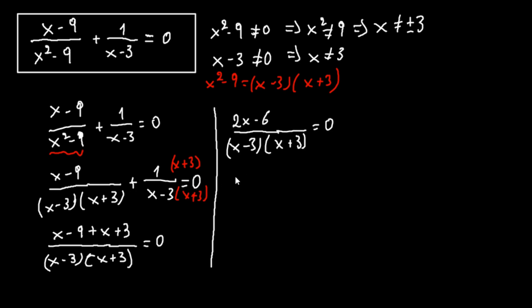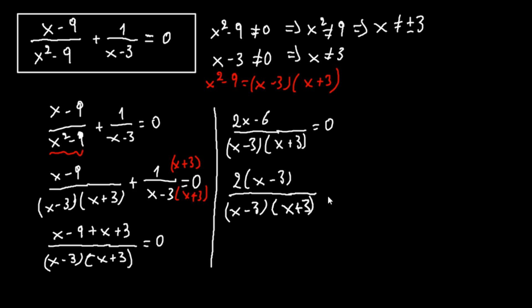Here we take out common factors. We have 2 times x minus 3, over x minus 3 times x plus 3, equals 0. The factor x minus 3 cancels, so we have finally 2 over x plus 3 equals 0.